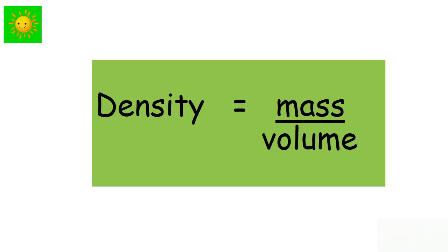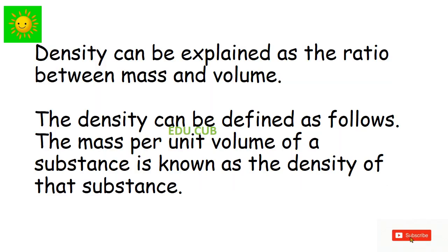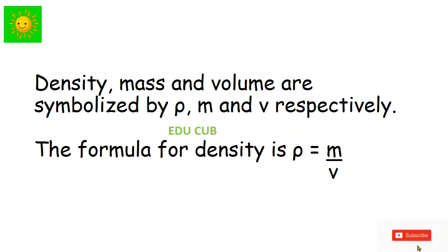There is a formula to find out the density: we have to divide mass by the volume. Density can be explained as a ratio between mass and volume. The density can be defined as follows: the mass per unit volume of a substance is known as the density of that substance. Density, mass, and volume are symbolized by rho (ρ), m, and v respectively.